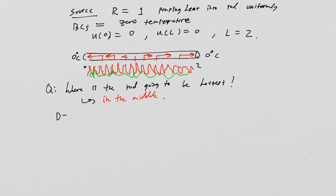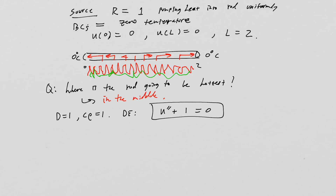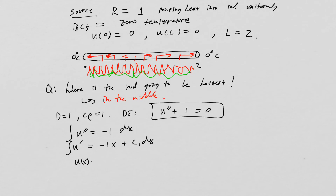Setting d equals one and c times rho equals one for simplicity, our differential equation becomes u double prime plus one equals zero. Integrating once: u prime equals negative x plus c₁. Integrating again: u(x) equals negative x squared over two plus c₁x plus c₂. This is our general solution.